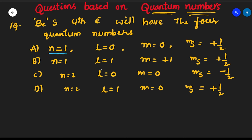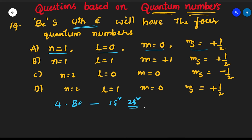Here n means principal quantum number, l means azimuthal quantum number, m means magnetic quantum number, and ms means spin quantum number. We require the four quantum numbers of the fourth electron. Beryllium's atomic number is 4, so its configuration is 1s² 2s². The last electron is the 2s² electron, so n is clearly 2.